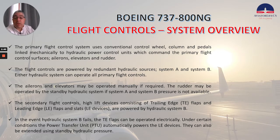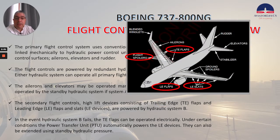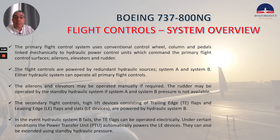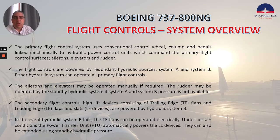The rudder may be operated by the standby hydraulic system if system A and system B pressure is not available. The secondary flight controls — high-lift devices consisting of trailing edge flaps and leading edge flaps and slats — are powered by hydraulic system B. In the event hydraulic system B fails, the trailing edge flaps can be operated electrically. Under certain conditions, the power transfer unit, or PTU, automatically powers the leading edge devices. They can also be extended using standby hydraulic pressure. We talked about the hydraulic system a few weeks ago — feel free to click the link above to review the entire system.